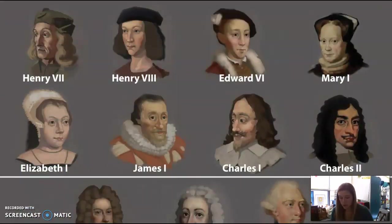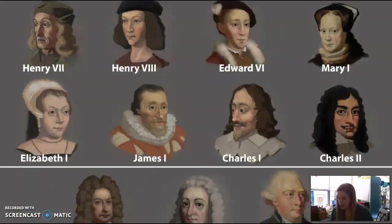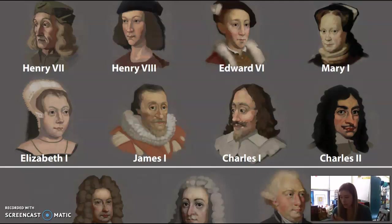People came to North America at different times and for many different reasons. Some came to get rich, whereas others came for religious reasons. Some hoped to escape poverty, and some were simply curious or adventurous. English monarchs played an important role in the establishment of the colonies, particularly Elizabeth I, James I, Charles I, Charles II, and George II. As we travel on our journey, we will refer to the regional map of colonial America, the Royal Portrait Gallery, and a timeline we will create together.